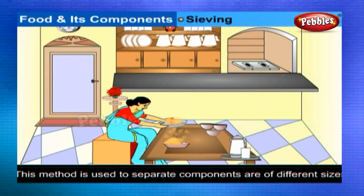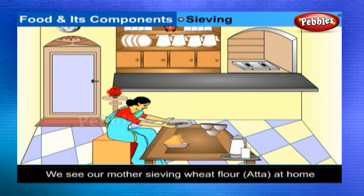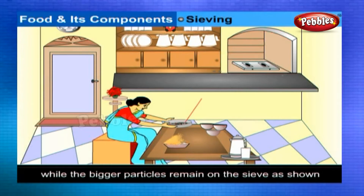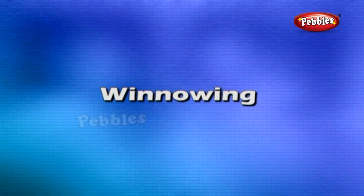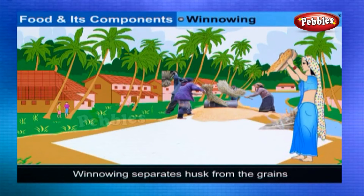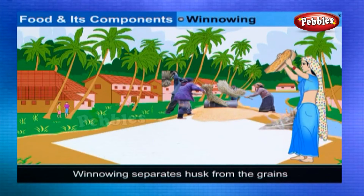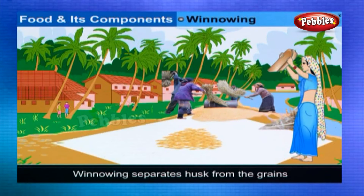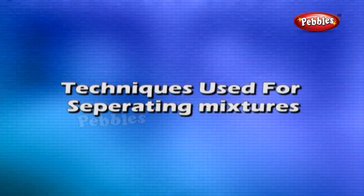Sieving: This method is used to separate a mixture in which components are of different sizes. You must have seen your mother sieving wheat flour (atta) at home — the fine particles of atta pass through the sieve while bigger particles remain on it. Winnowing: This method is generally used by farmers to separate grain from husk after threshing. The farmer allows the mixture of grain and husk to fall from a height — the heavier grains fall vertically down, while the lighter husk is carried away by wind and forms a separate heap.